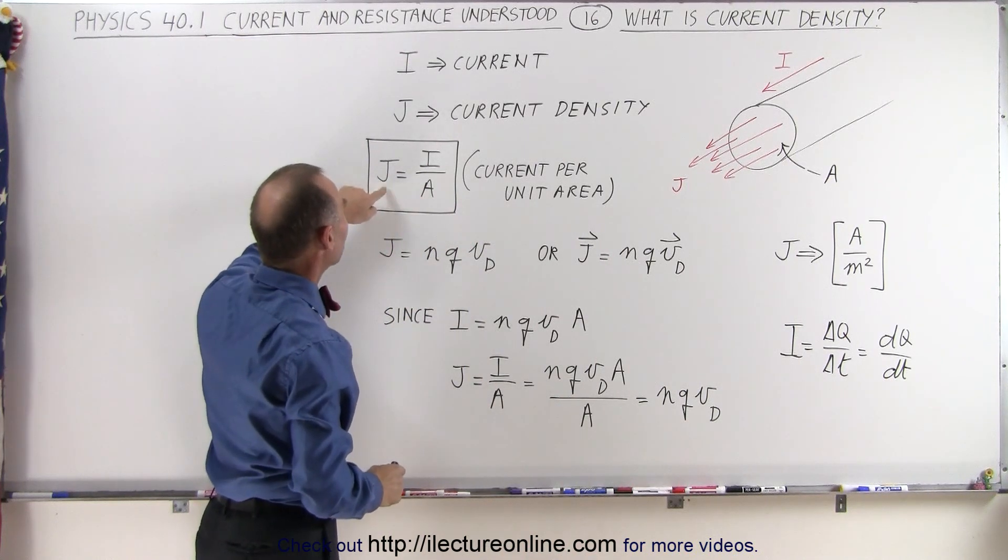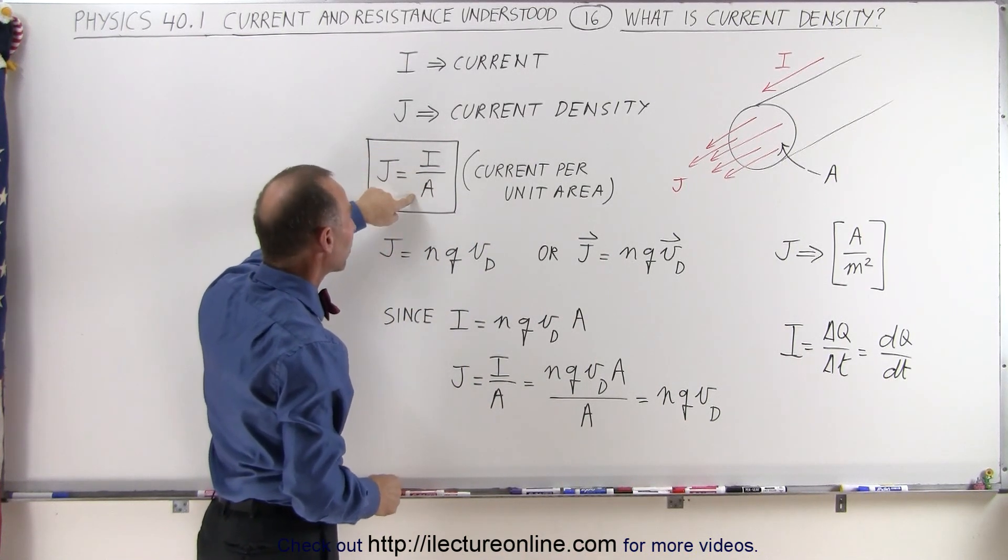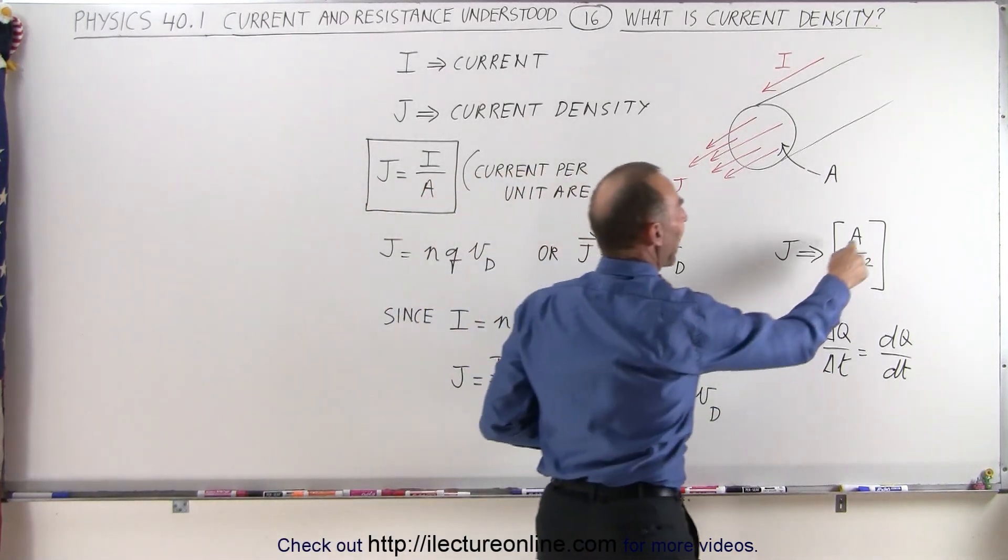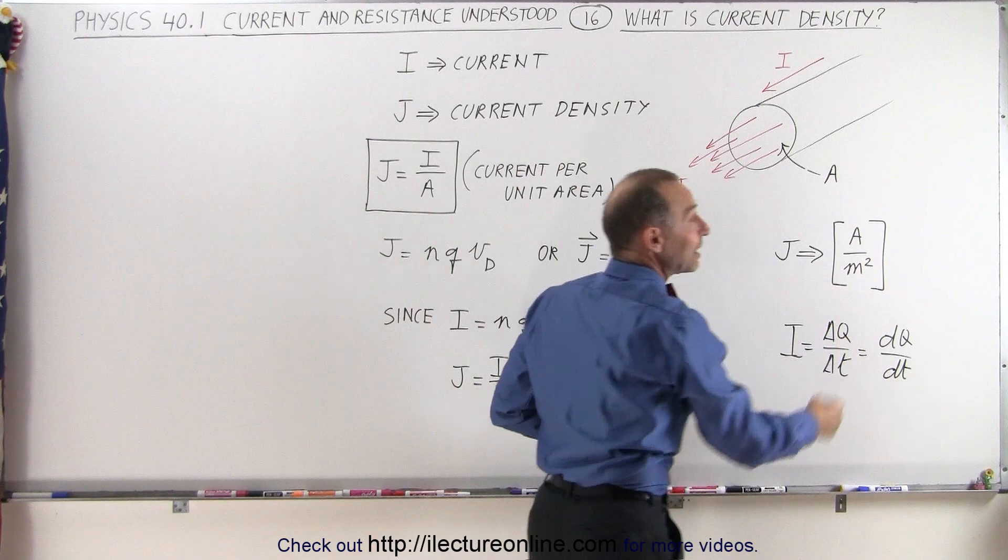So J, the current density, is I, the current, divided by the cross-sectional area of the conductor. The units, therefore, would be amps for current divided by meter squared. So that's the unit of the current density.